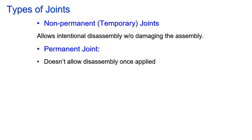There are two types of joints. Non-permanent joints are temporary — they allow disassembly of an assembly without causing damage. Permanent joints do not allow disassembly; if you try to separate a permanent joint, it will damage the part.